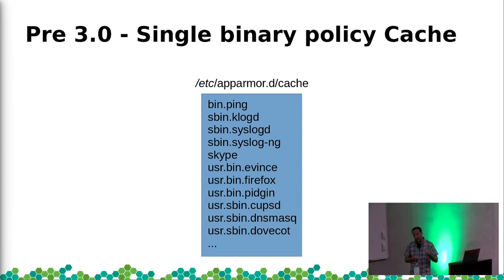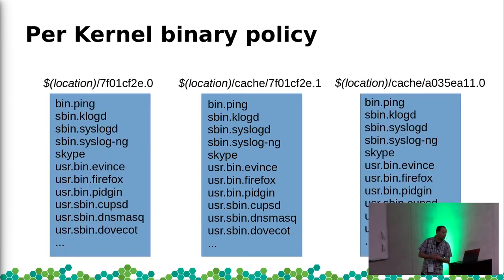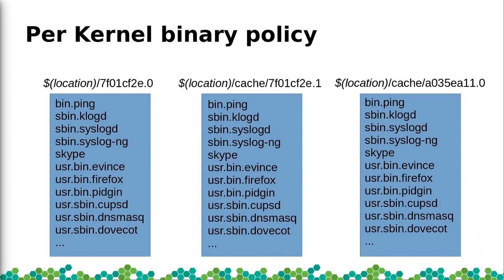Recompiling policy at boot also precludes us from doing early loads, because we can't do everything needed to compile policy at that stage. With 3.0, we get per-kernel binary policy — multiple cache directories based on hashing of the feature ABI supported by the kernel. Each kernel gets its own compiled policy. With different kernel features, the compiled output could actually differ. The system handles hash collisions too — that's what the .0 and .1 suffixes on cache directories are for.